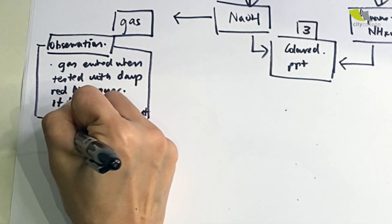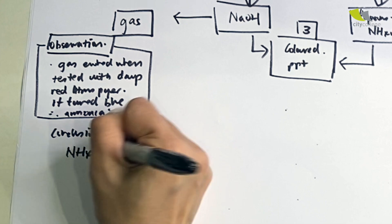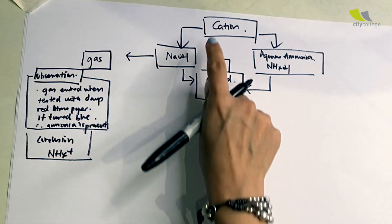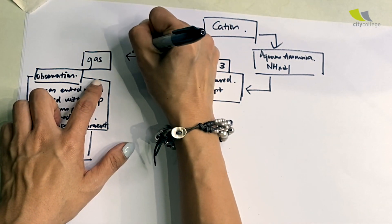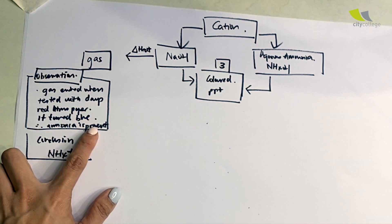That can conclude the test. When you add NaOH and you heat, the gas evolved, if tested with red litmus paper it will turn blue. Ammonia gas is present, therefore I can conclude ammonium is inside.